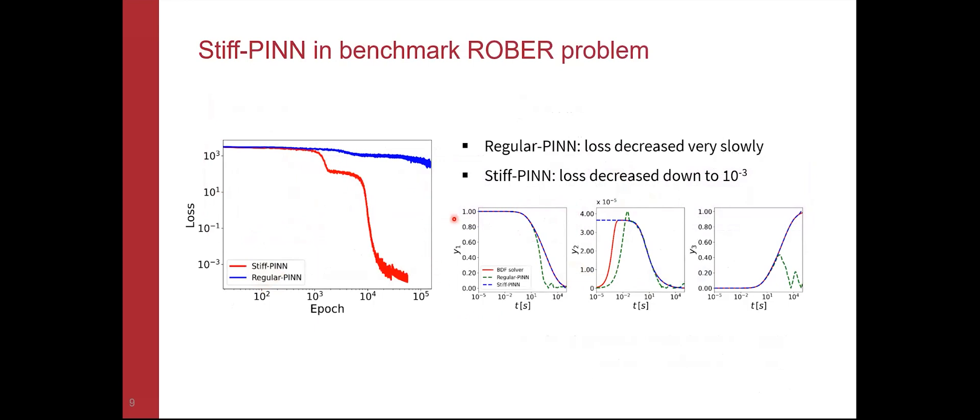With this approximation, we apply it to the first test problem, the Robertson problem. From the loss function, we see if we don't use this stiffness removal, the loss function stays at a very high value even with training for a very long time. But with that approximation, we can actually quickly get the loss below 10^-3. And as mentioned before, it approximates the solution pretty well for the slow evolving species and also for the later stage of the faster evolving species.